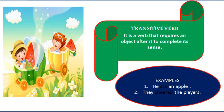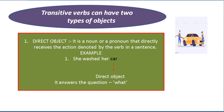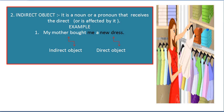They cheered the players — whom did they cheer? The players. So the transitive verb can have a direct object or an indirect object. The direct object is the noun or pronoun that directly receives the action denoted by the verb. Like 'she washed her car' — car is the direct object. What did she wash? She washed the car.